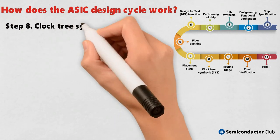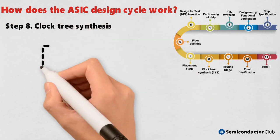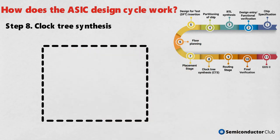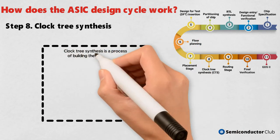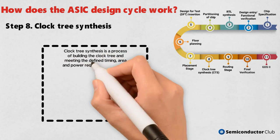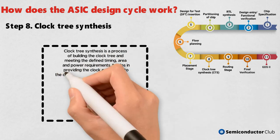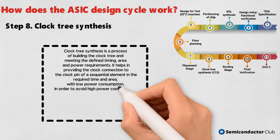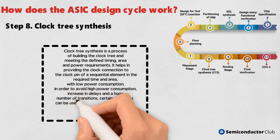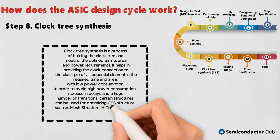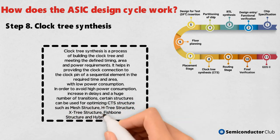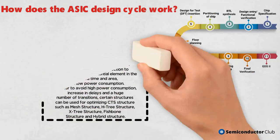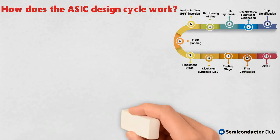Step 8: Clock Tree Synthesis. Clock tree synthesis is a process of building the clock tree and meeting the defined timing, area, and power requirements. It helps in providing the clock connection to the clock pin of a sequential element in the required time and area, with low power consumption. To avoid high power consumption, increased delays, and a huge number of transitions, certain structures can be used for optimizing CTS, such as mesh structure, H-tree structure, X-tree structure, fishbone structure, and hybrid structure.